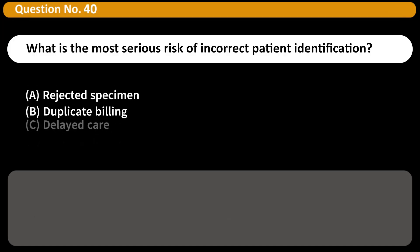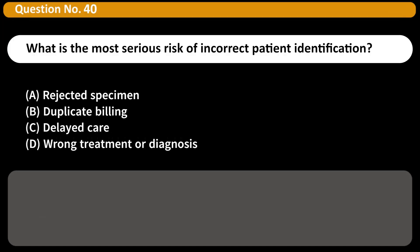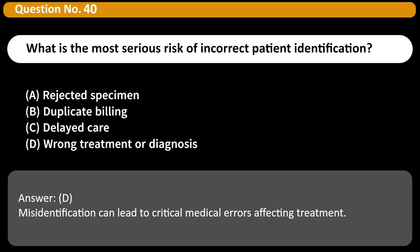What is the most serious risk of incorrect patient identification? A. Rejected specimen. B. Duplicate billing. C. Delayed care. D. Wrong treatment or diagnosis. Answer: D. Misidentification can lead to critical medical errors affecting treatment.